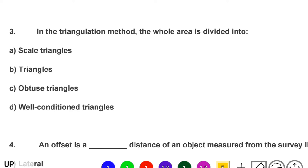Next question: in the triangulation method, the whole area is divided into — option A: scalene triangles, option B: triangles, option C: obtuse triangles, option D: well-conditioned triangles. The correct answer is option D, well-conditioned triangles.